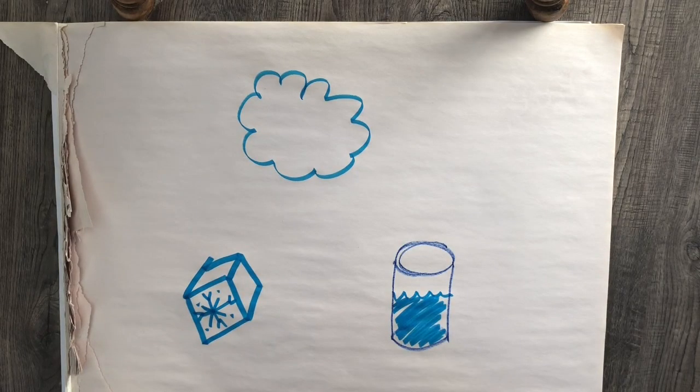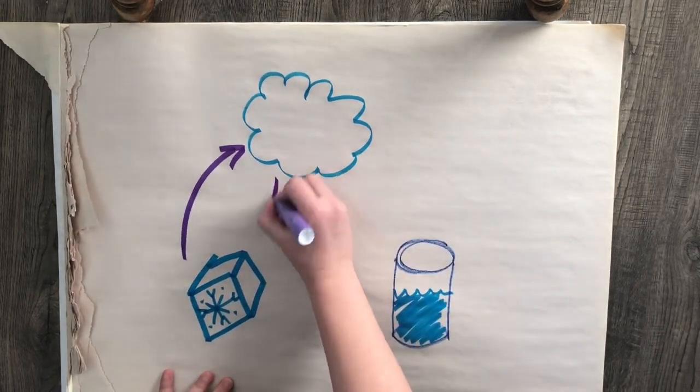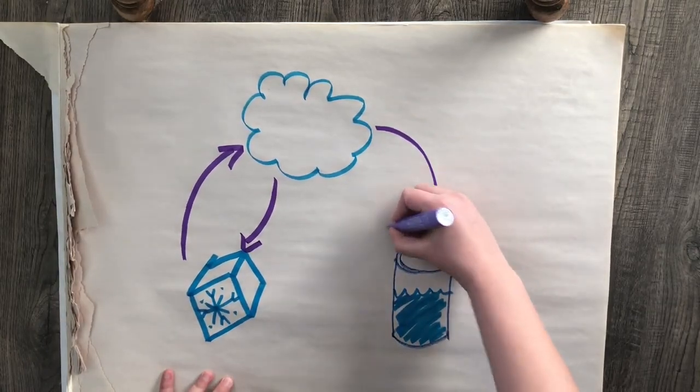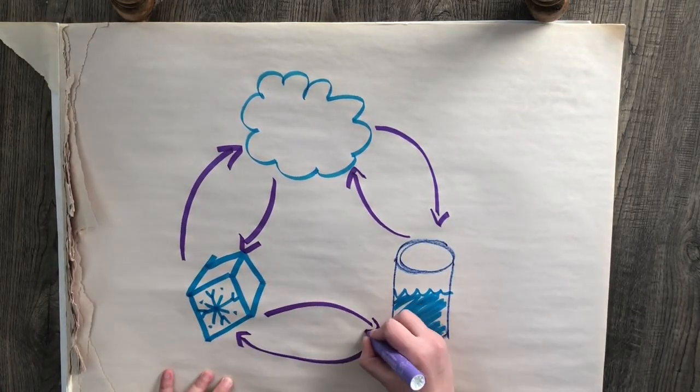Water, of course, can move between these stages of matter. Solid to gas is called sublimation. Gas to solid is deposition. Gas to liquid is condensation. Liquid to gas is evaporation. Liquid to solid is freezing. And solid to liquid is melting.